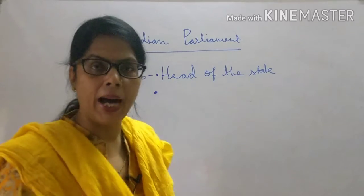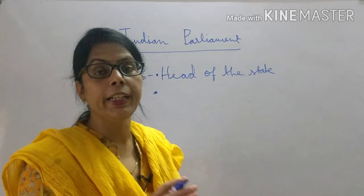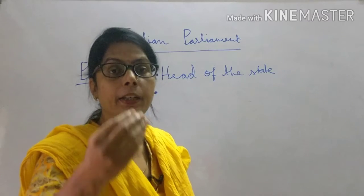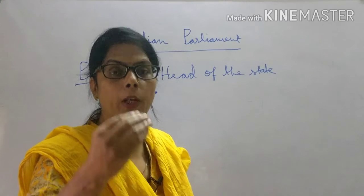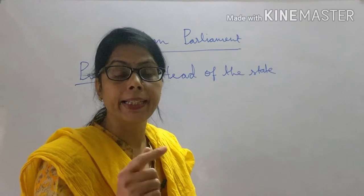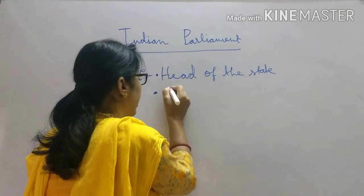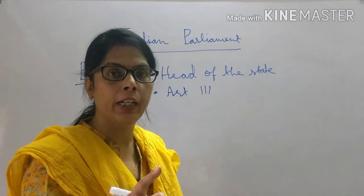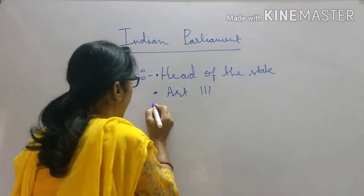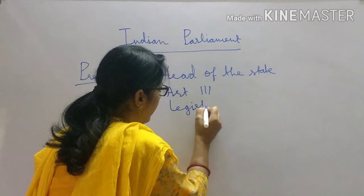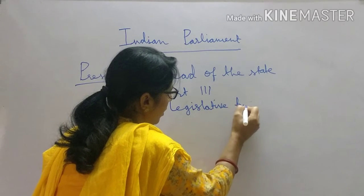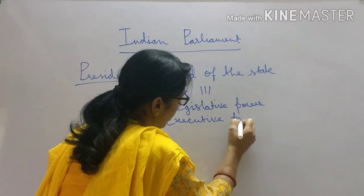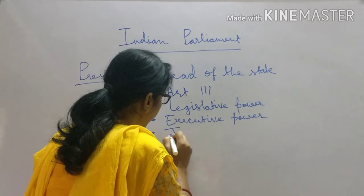Parliament passes laws, but any law cannot come into being until the President gives his or her assent. When the President gives the assent, only then will any law come into being. According to Article 111, the President's assent is mandatory for every law to come into being. The President has many legislative powers, executive powers, and judiciary powers.